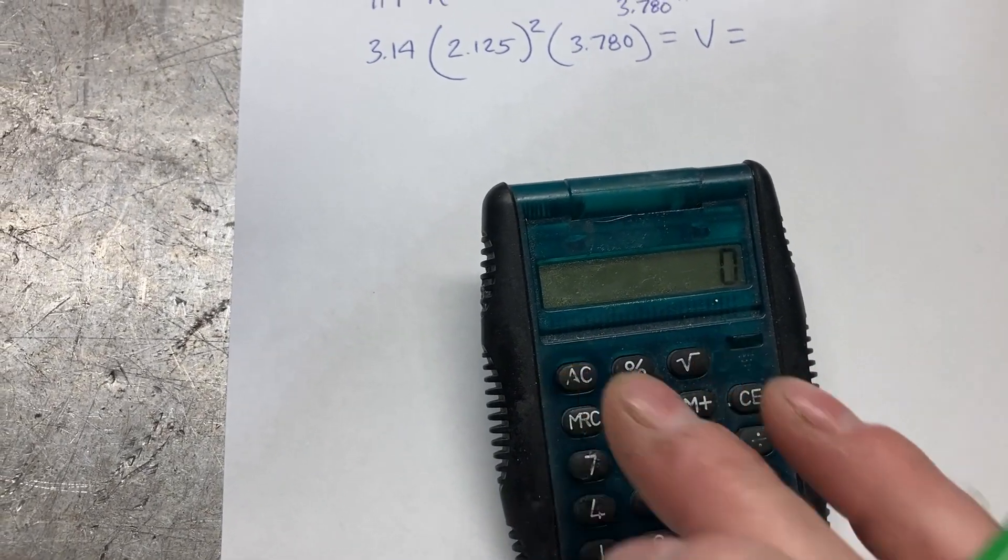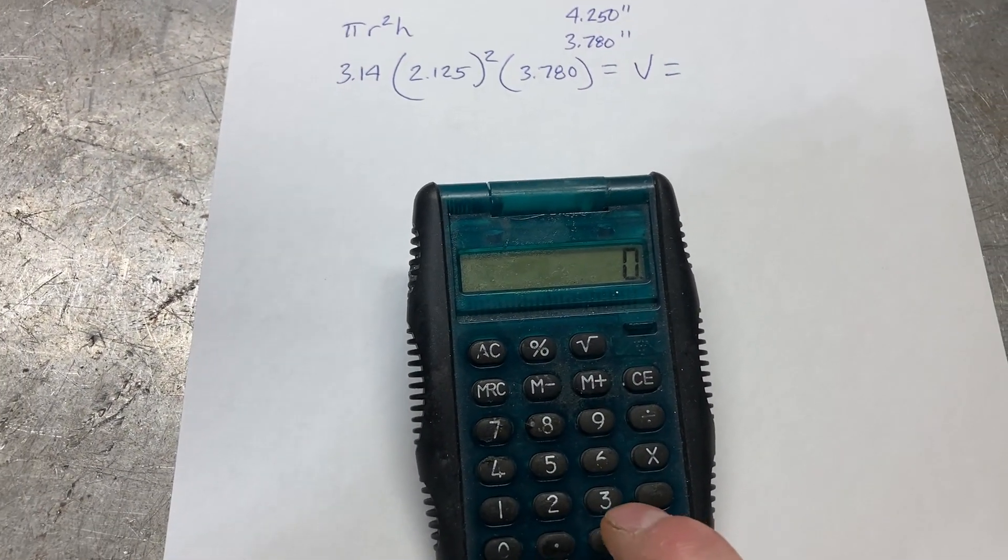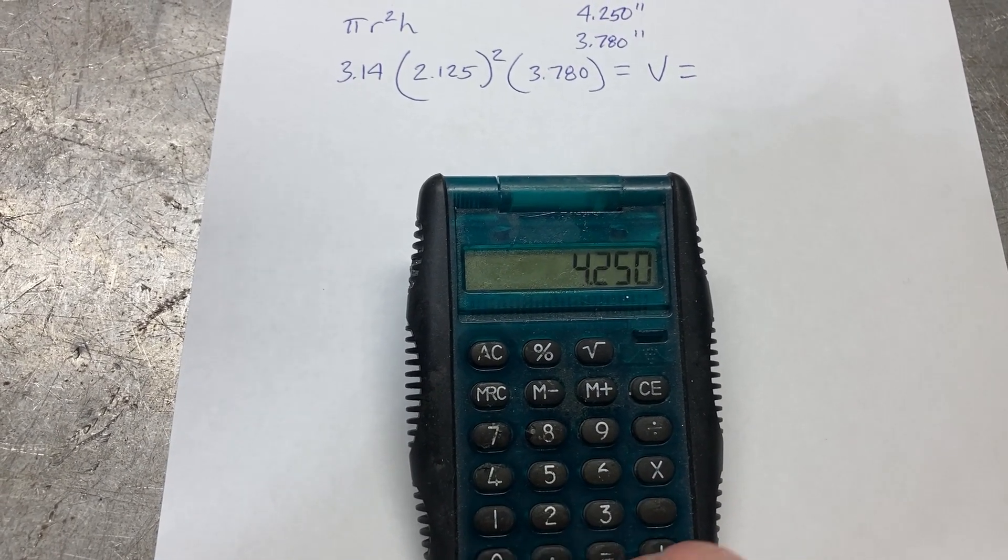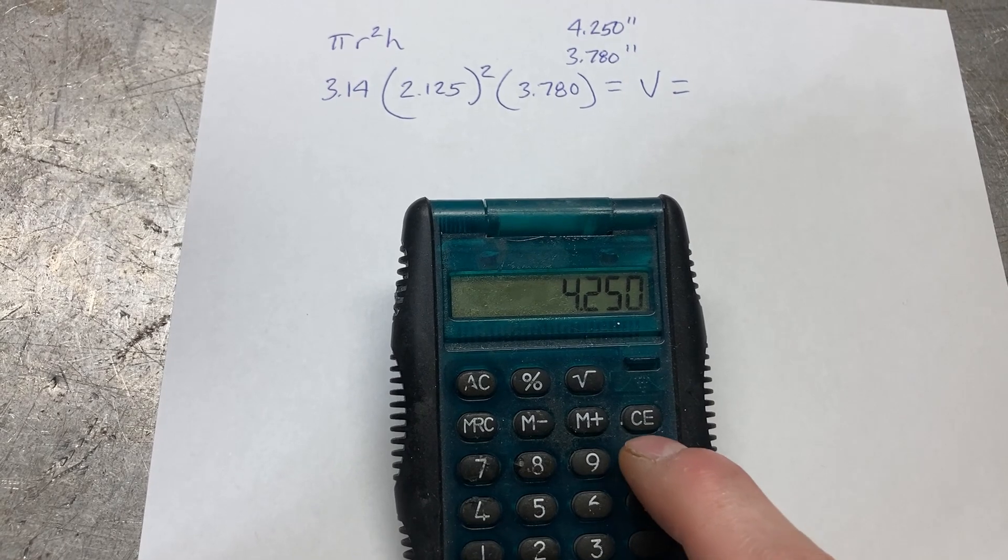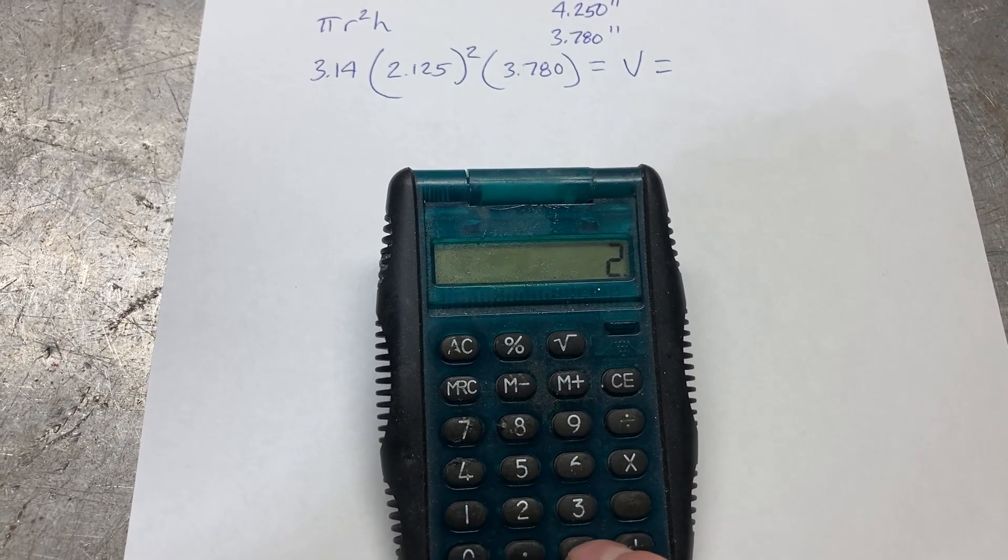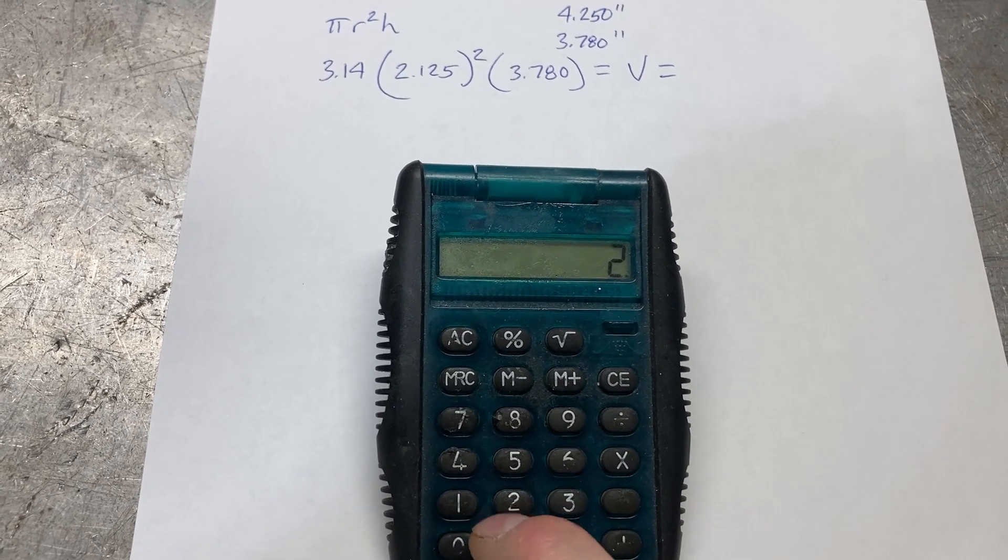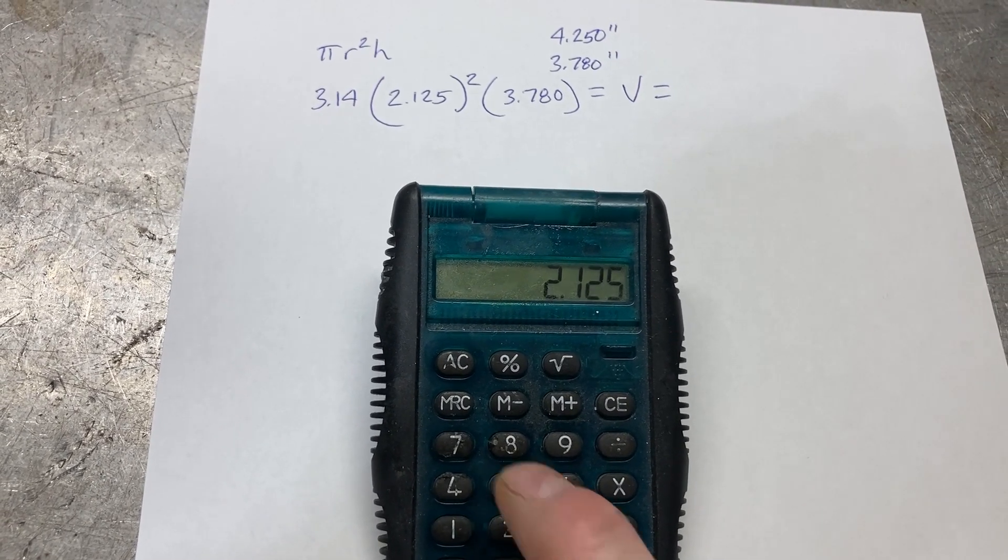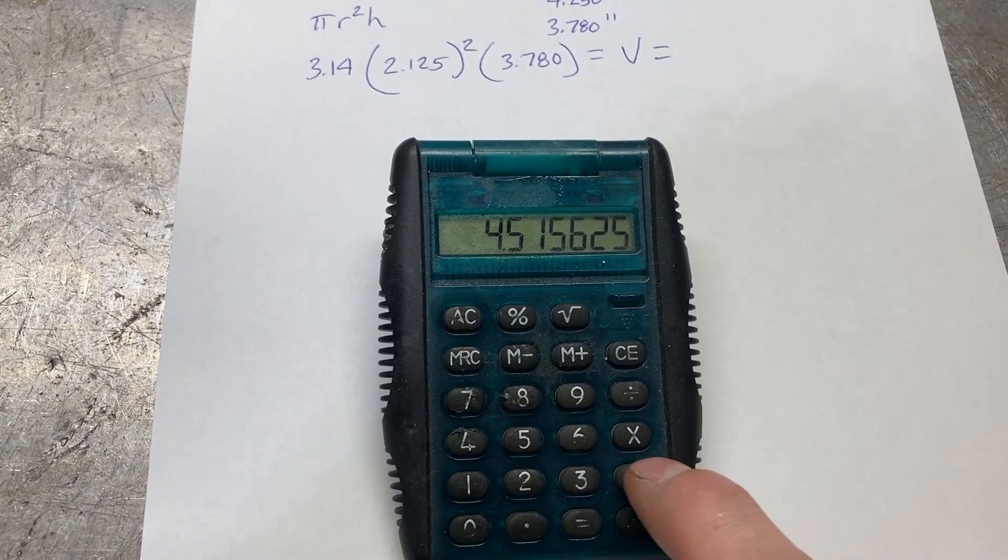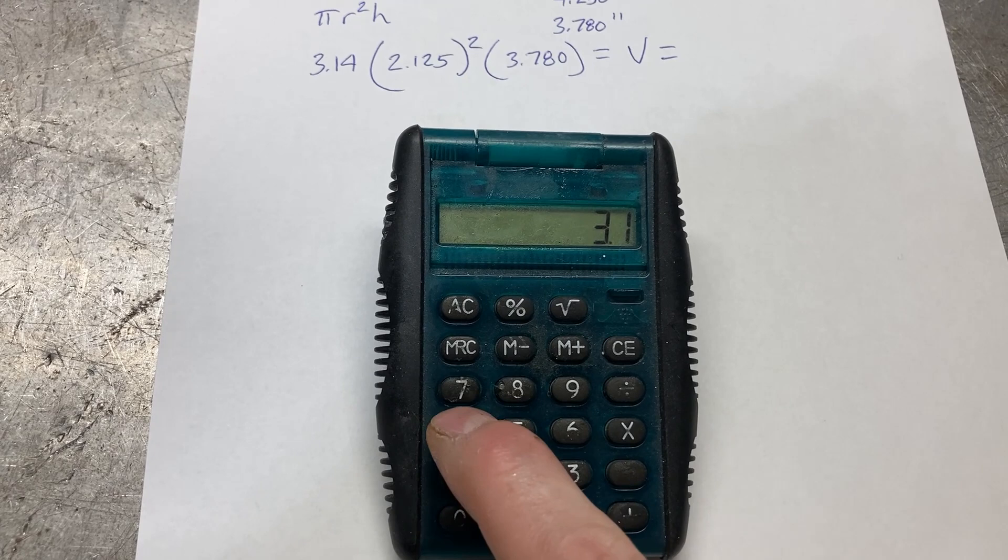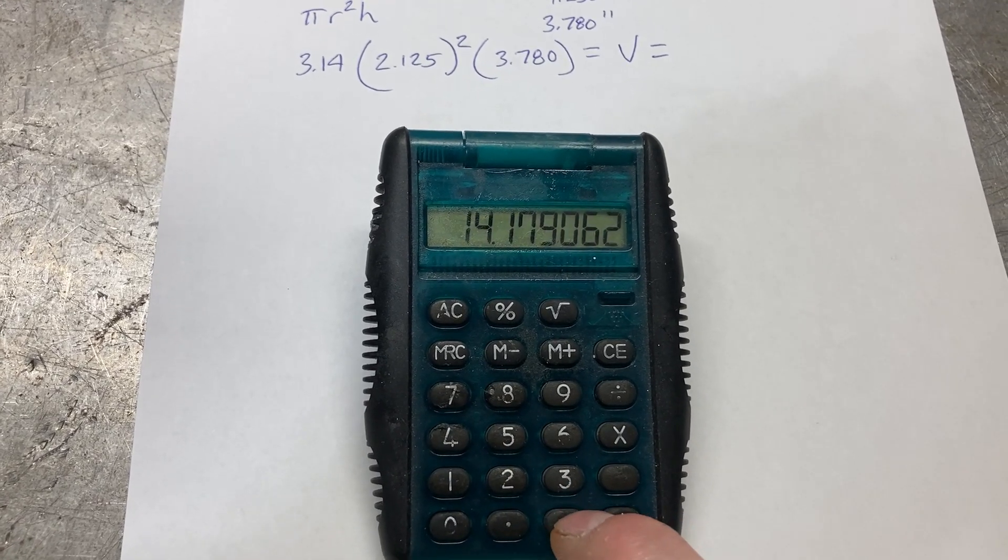If you want to walk through the formality of it using our handy dandy calculator: your bore size divided by 2, that would be the radius. We're going to square that, then multiply by 3.14 which is pi, then multiply by our stroke.